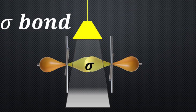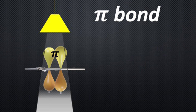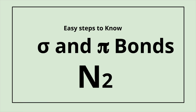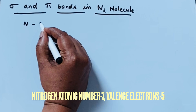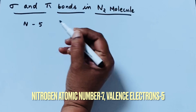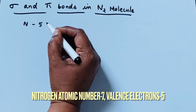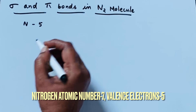Welcome to Aurora chemistry for everyone. Sigma and pi bonds are covalent bonds which are formed by overlapping of orbitals. Let us see how many sigma and pi bonds are present in nitrogen molecule. Nitrogen has atomic number 7 and 5 valence electrons. From this we can write the Lewis dot structure for one nitrogen atom.